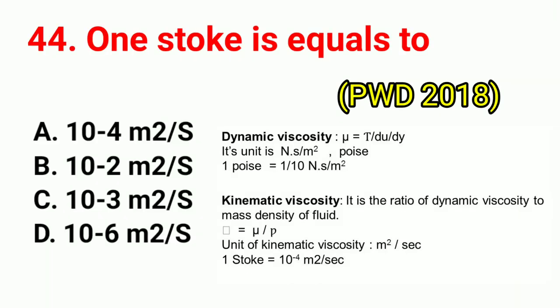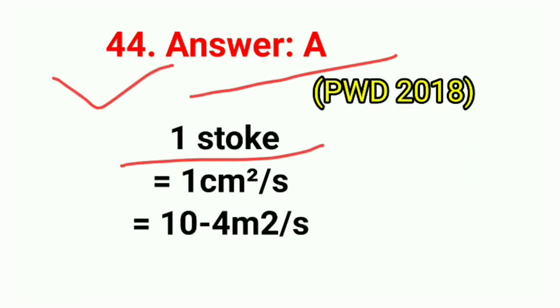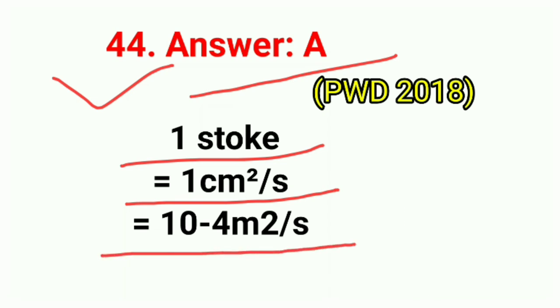Question No. 44. One stoke is equal to? Correct answer is option A: 10⁻⁴ m²/s. One stoke = 1 cm²/s = 10⁻⁴ m²/s.